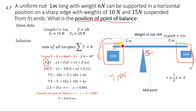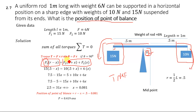The anti-clockwise torque produced by the 15 newton weight has a moment arm of (r − x), where r is the half-length of 0.5 meter. So this torque is F1 × (r − x). The clockwise torque produced by the 10 newton weight has a moment arm of (r + x), giving F2 × (r + x).